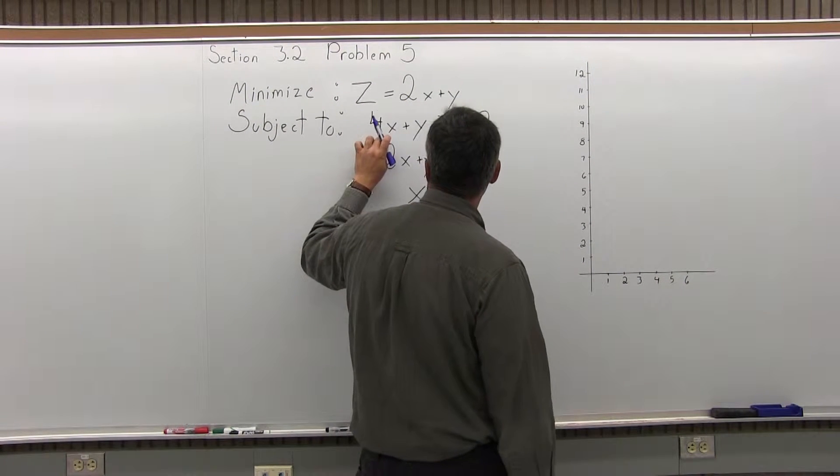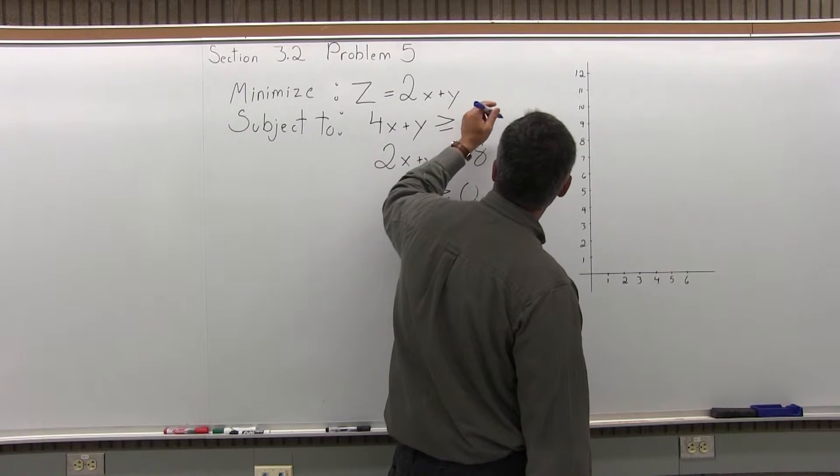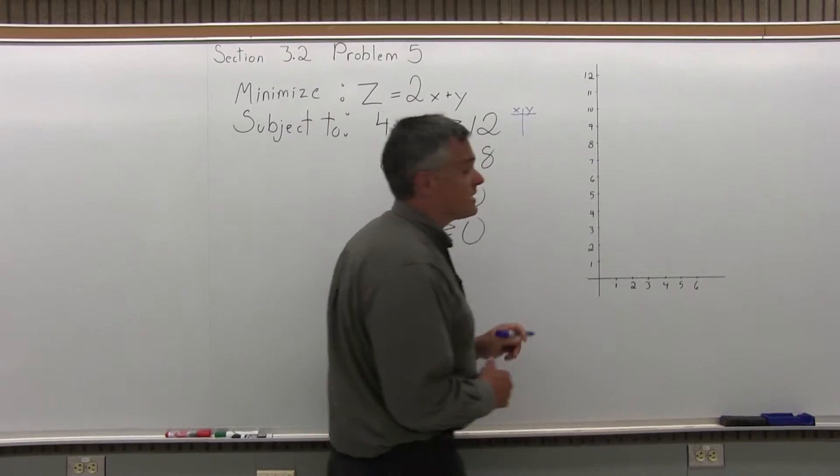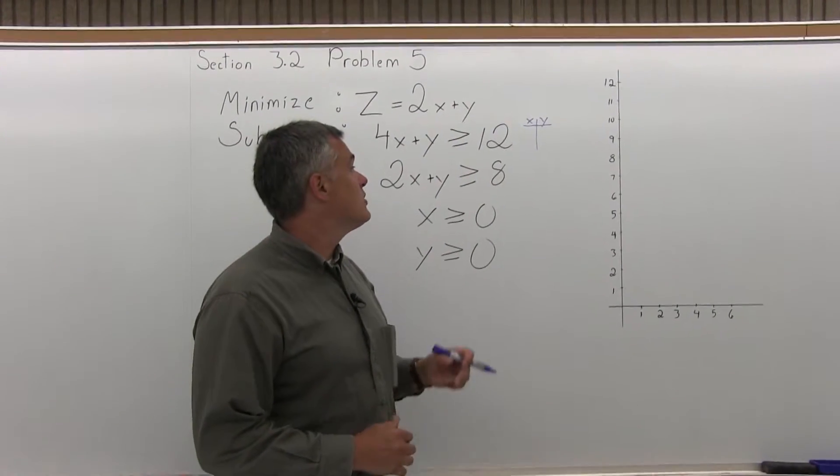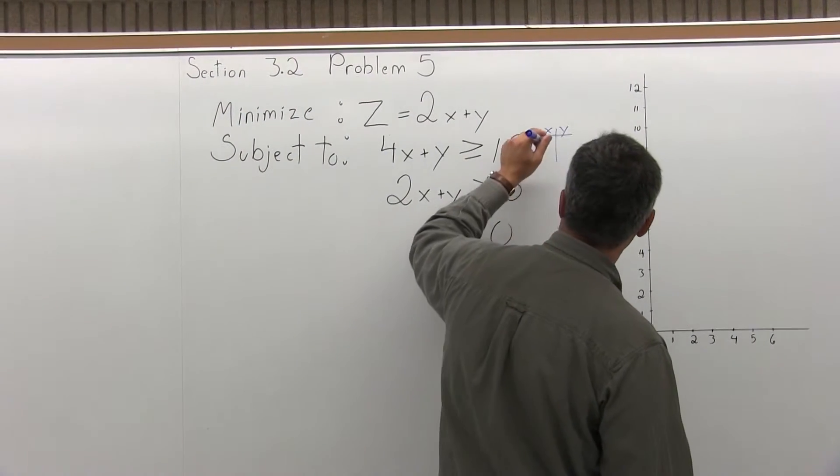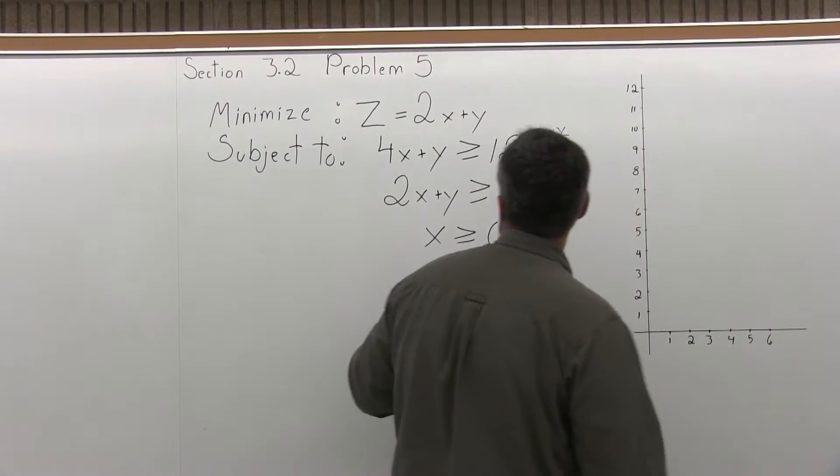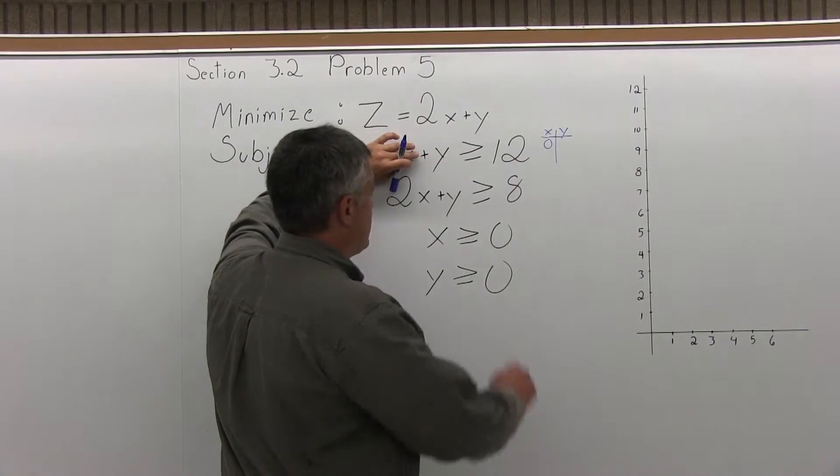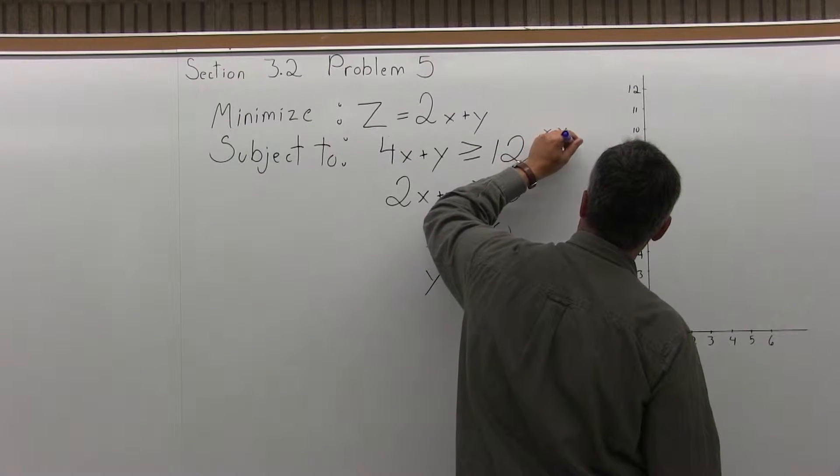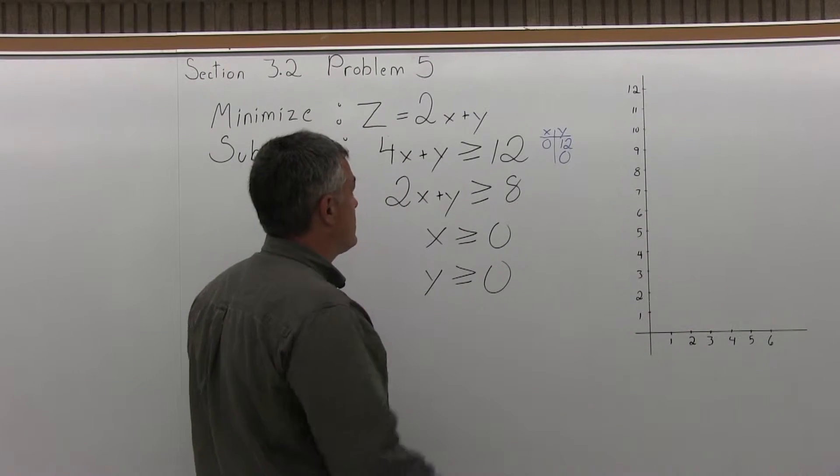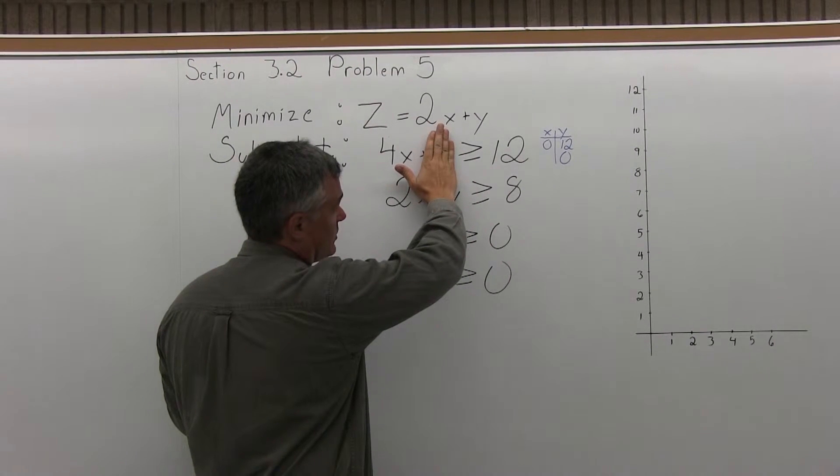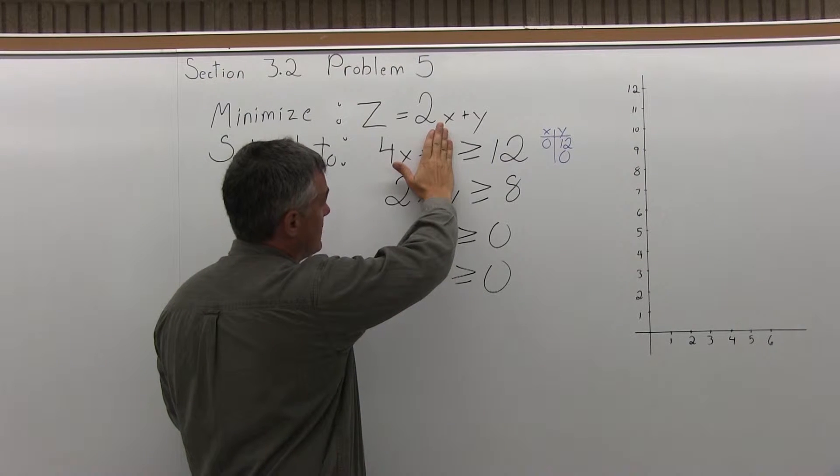So I'll start with 4x plus y is greater than or equal to 12. To graph that, I'm going to make a little xy chart next to it and find two points that would make this true if I pretend it's an equation, if I pretend it's equals 12, not greater than or equal to 12. So first, I'm going to let x equals zero, and if I pretend it's an equals, I just have y equals 12. And to get a second point, if I now pretend y is zero and I have an equals, I have 4x equals 12. So to make it 12 equals 12, x must be 3.